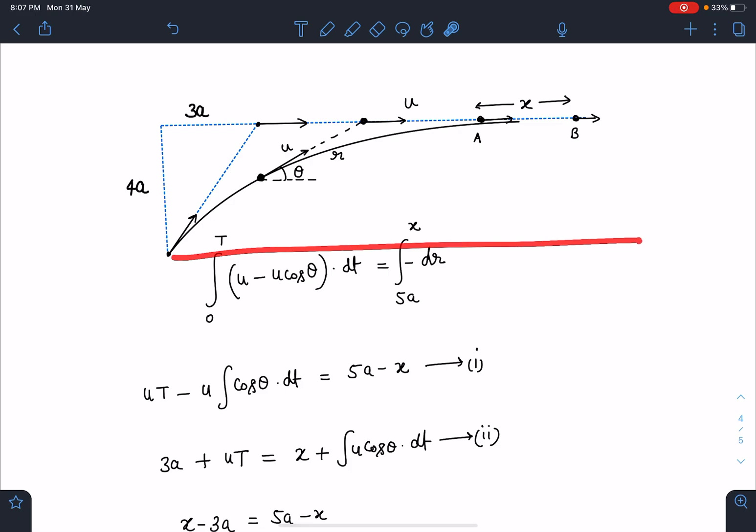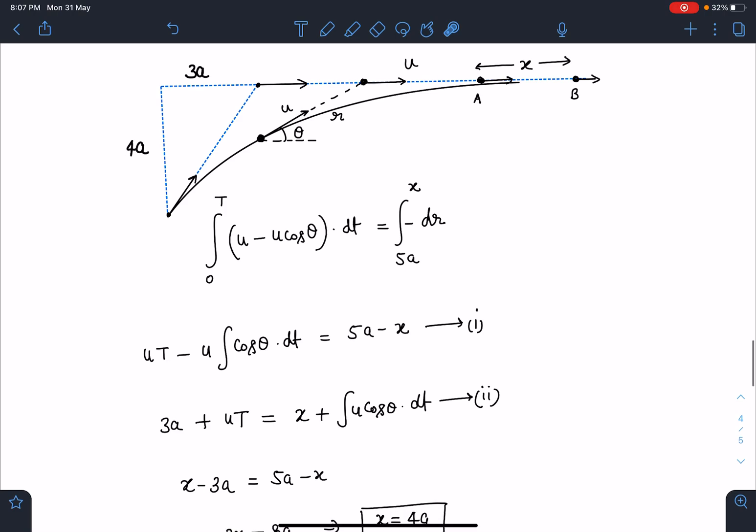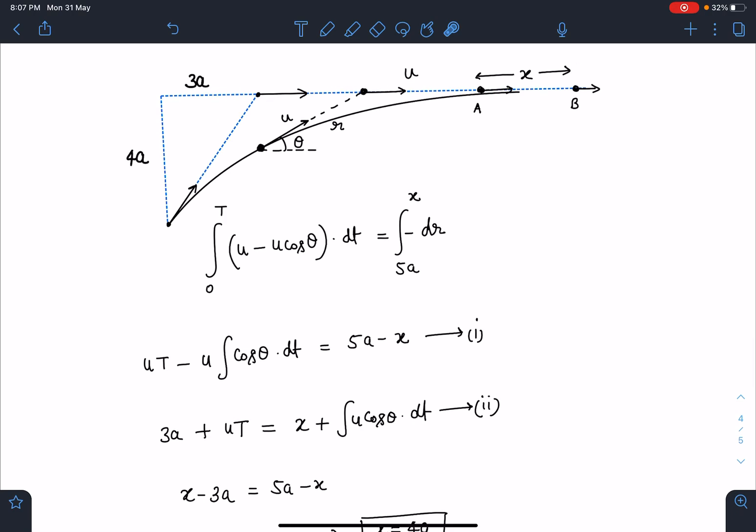It will be somewhere here. So I can say integral(u*cos(theta)*dt), this value I can substitute. 3a plus uT, this is the distance, and that must be equal to this distance x plus integral(u*cos(theta)*dt). I can use this logic.